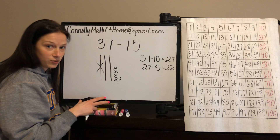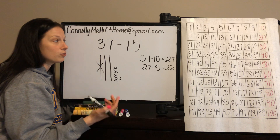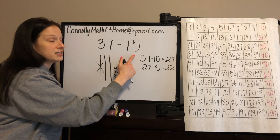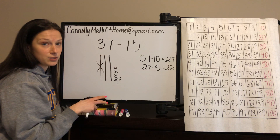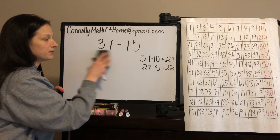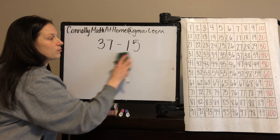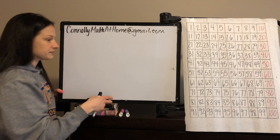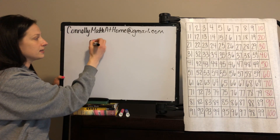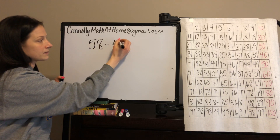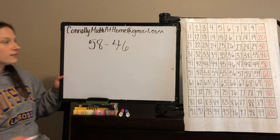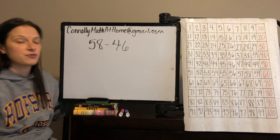Let's try another one, and then we're going to go into what happens when the digit in the ones place of the number being subtracted is greater than the digit in the ones place of the number we're subtracting from. One more example where there is no regrouping: 58 minus 46.